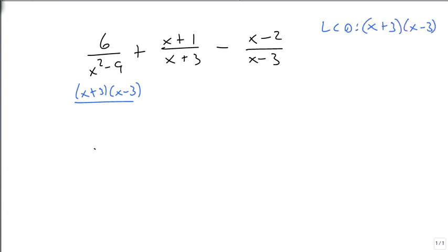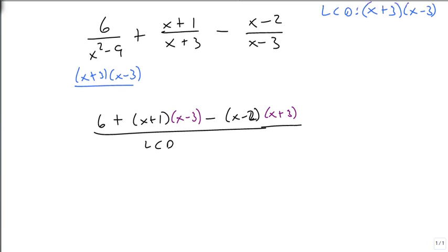So when I'm going to write all of this over the LCD, I'm going to get 6 times what it's missing, which is nothing, x plus 1 times what it's missing which is the x minus 3, minus x minus 2 times the piece it's missing which is the x plus 3, all over the LCD. Notice I'm not writing the LCD yet because I don't want it to disappear just yet.